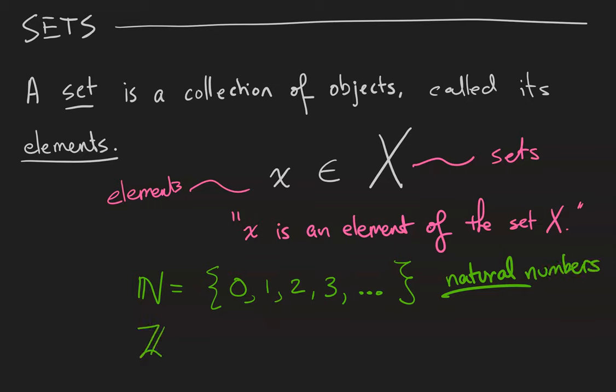We also have the integers, which are the positive and negative counting numbers. So that's going to be some ellipses here on the left side to denote the negative continuation. Then we'll have negative 2, negative 1, 0, 1, 2, dot, dot, dot, to refer to the positive continuation. So these are the integers.